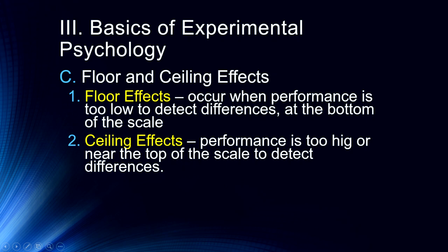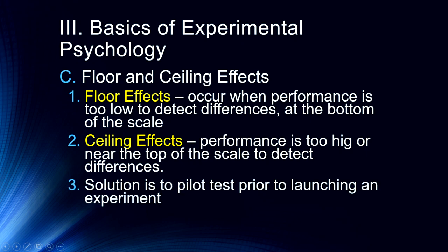The opposite is a ceiling effect, where performance is too high or near the top of the scale to detect differences. This can happen in short-term memory tasks if we've made them too easy. For example, in the digit span task you can get both floor and ceiling effects. Pretty much two to four digits, participants are going to get those 100% correct. At nine to ten digits a few might get them correct, but at 12 to 15 digits no one will. So you want to calibrate these measures by pilot testing your measures prior to launching an experiment to ensure you'll get meaningful results.